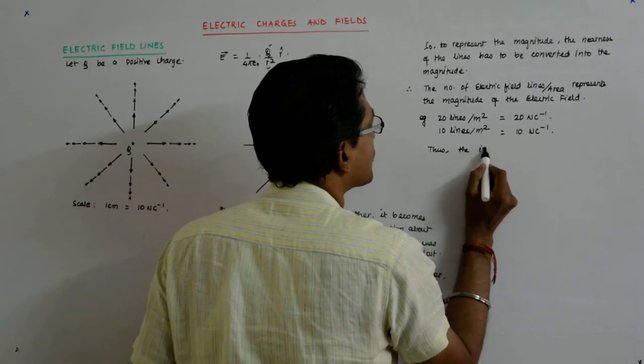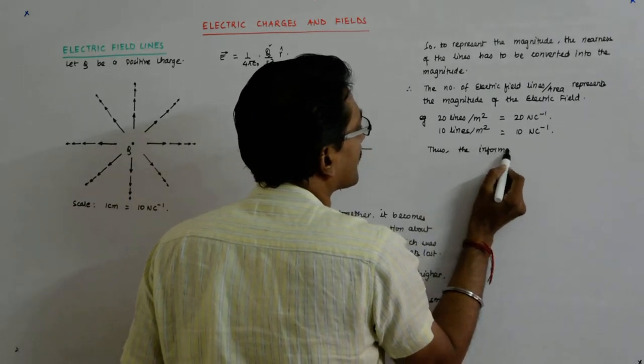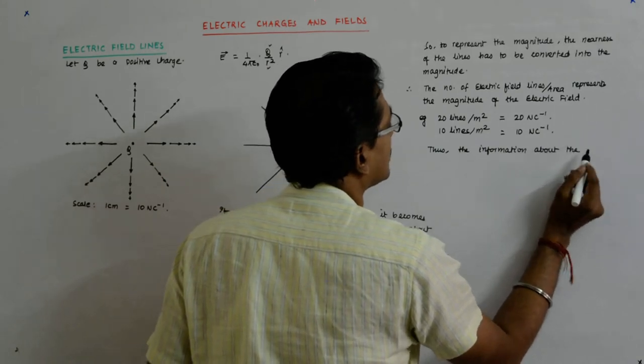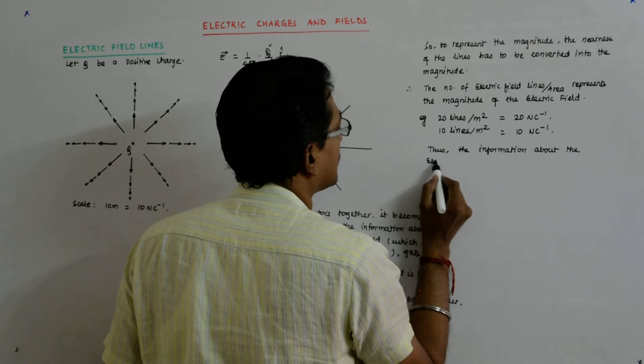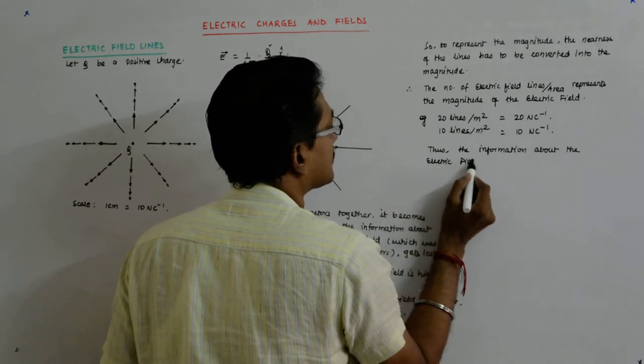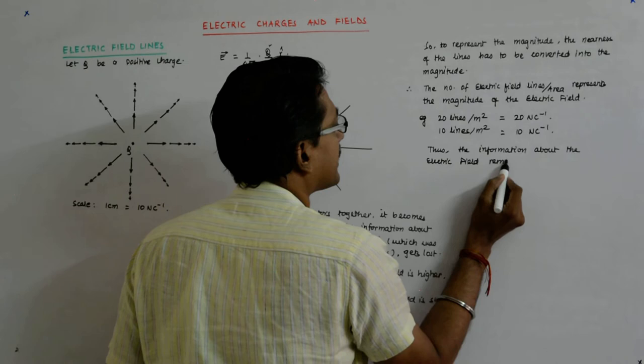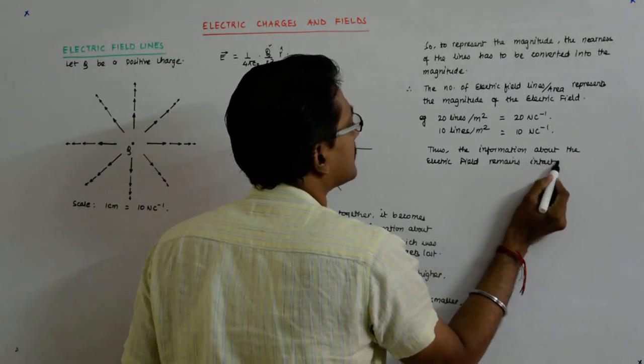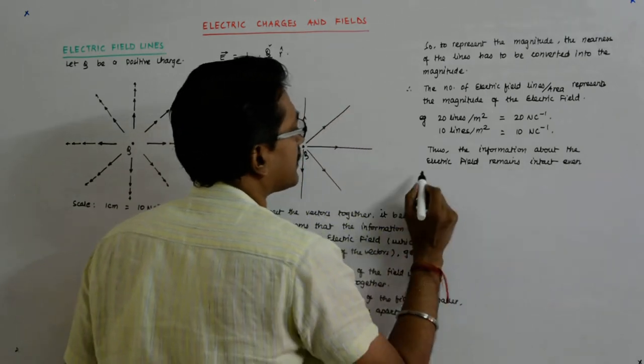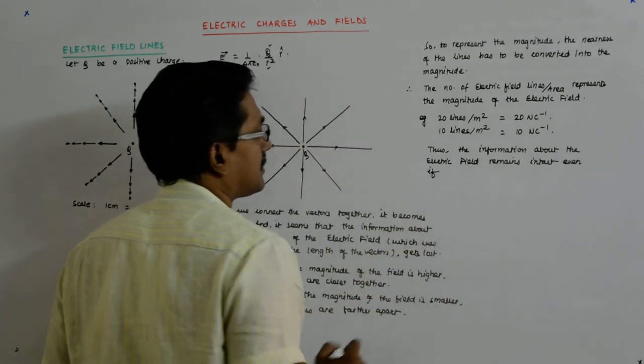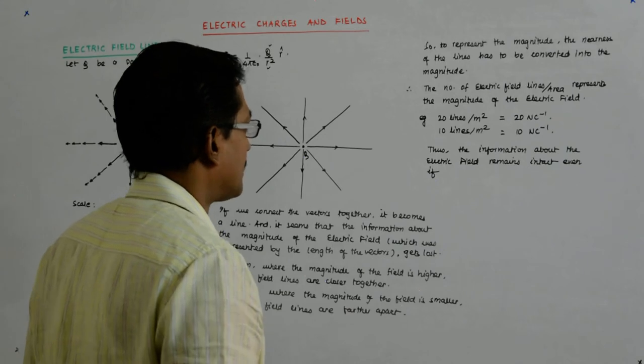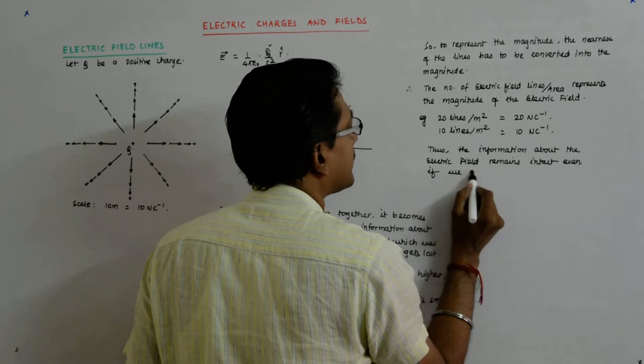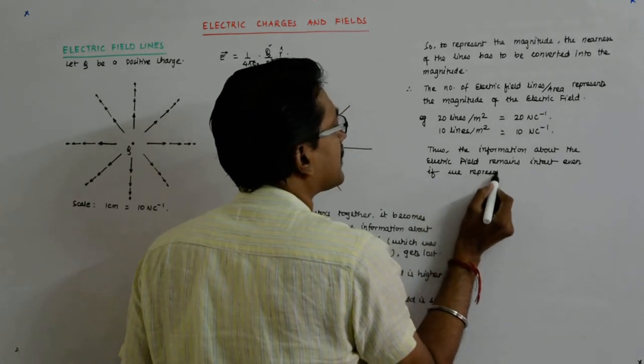The information about the electric field remains intact even if we represent it by lines.